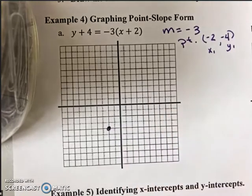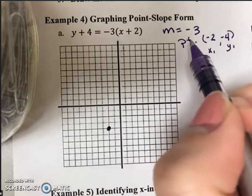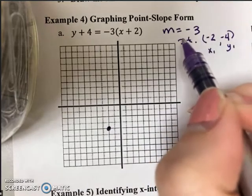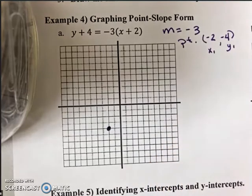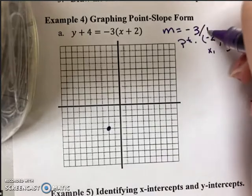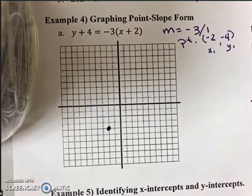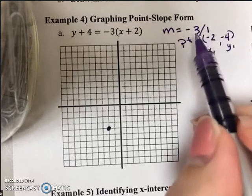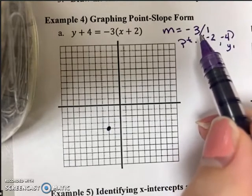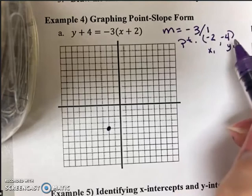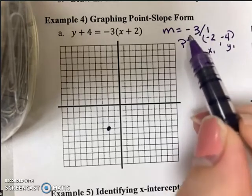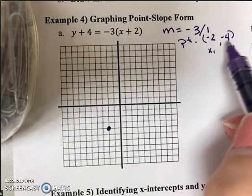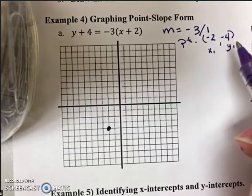To get my second point, I can use the slope. So my slope is negative 3. If I wanted to, I could rewrite it as negative 3 over 1, just because it helps me keep in mind that we are using rise over run. So my rise would be moving down 3, my run would be moving right 1.